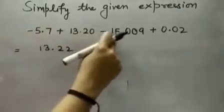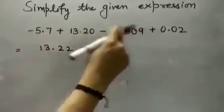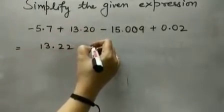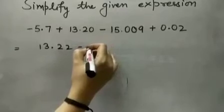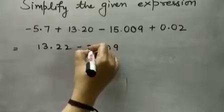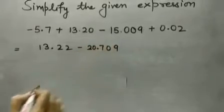Minus 5.7 minus 15.009. And both are negative numbers just add and put negative sign that will become minus 20.709.